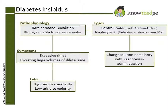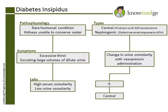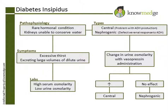Choice D, change in urine osmolarity with vasopressin administration, is the correct answer. Vasopressin in patients with central diabetes insipidus would increase the urine osmolarity, but would not have an effect in patients with nephrogenic diabetes insipidus.